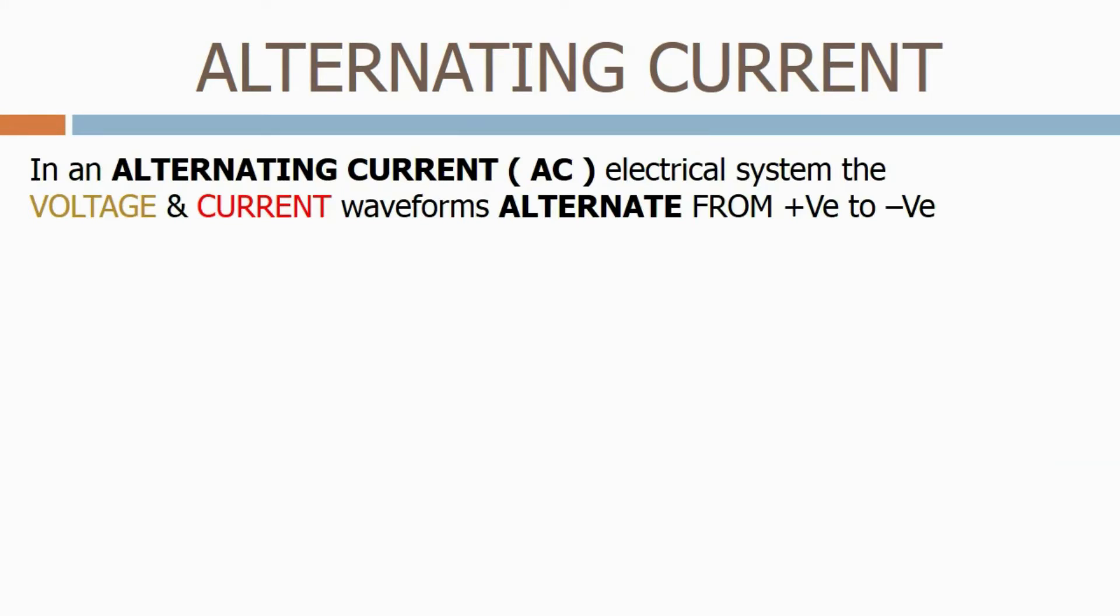In an alternating current or AC electrical system, the voltage and current waveforms alternate from positive to negative. What we normally see in an alternating current system is a sine wave, and as we said, it goes from positive to negative over a full cycle over time.